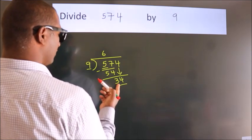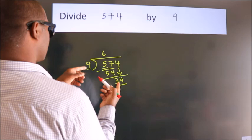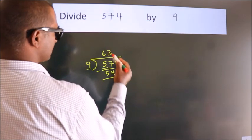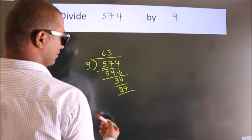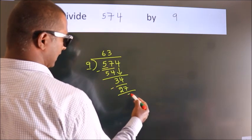A number close to 34 in 9 table is 9, 3, 27. Now, we subtract, we get 7.